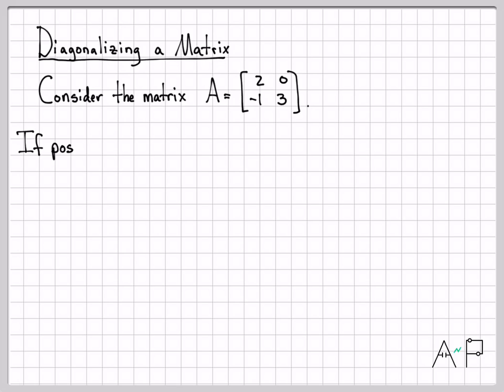So here's the matrix A that we're going to work with. It's a 2 by 2 matrix. And if possible, we're going to diagonalize the matrix. In other words, we're going to try to write it as P times the diagonal matrix D times P inverse. So we're going to see if we can get it written in this form.